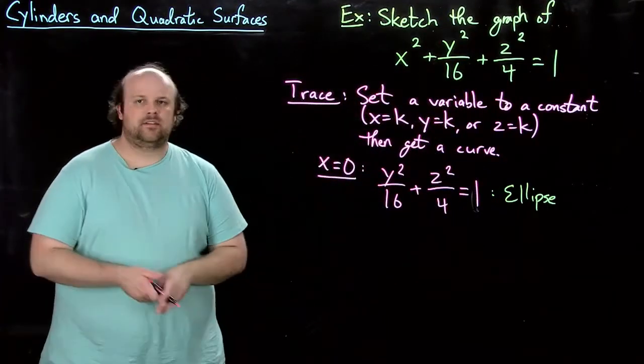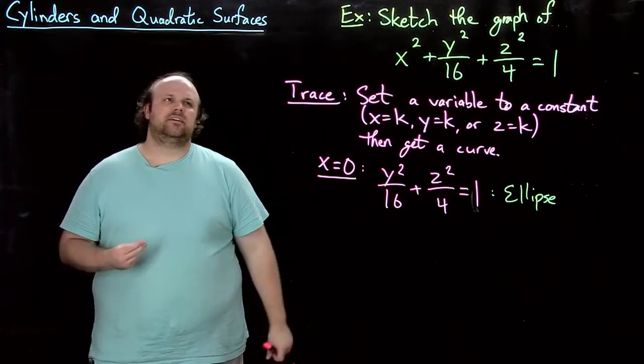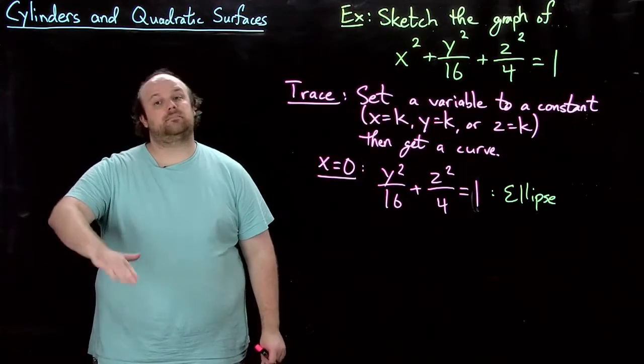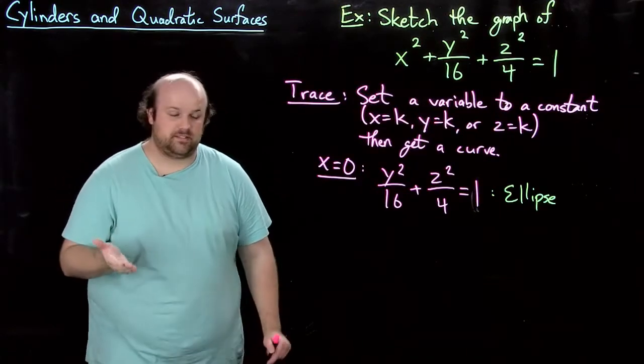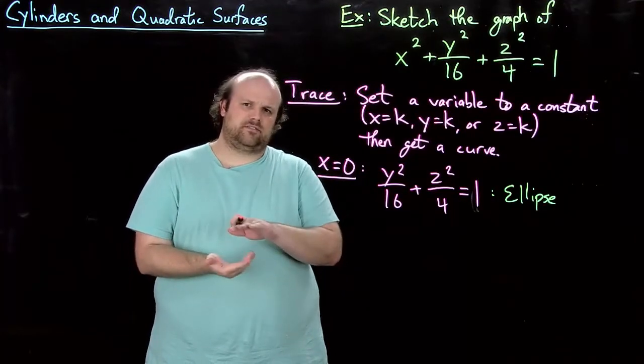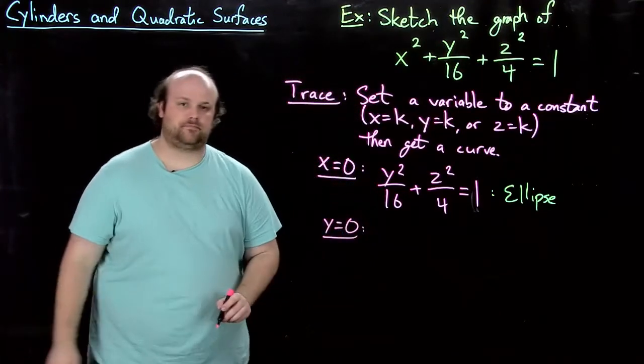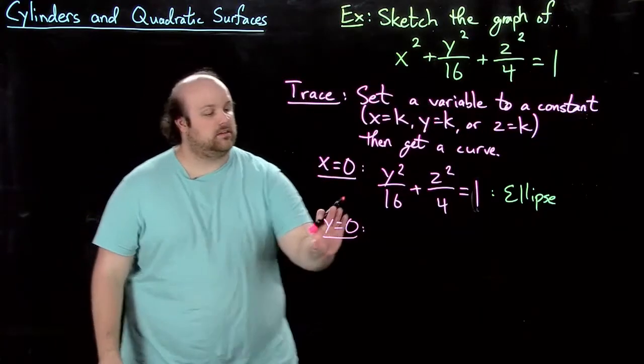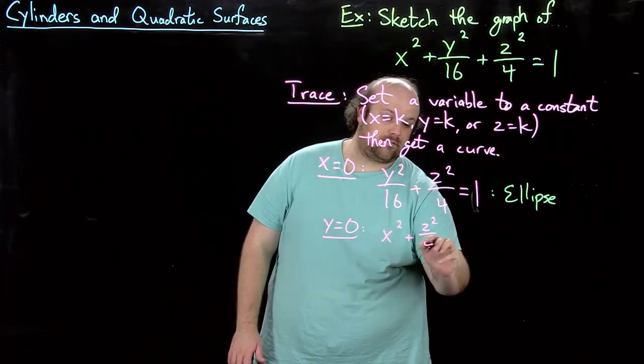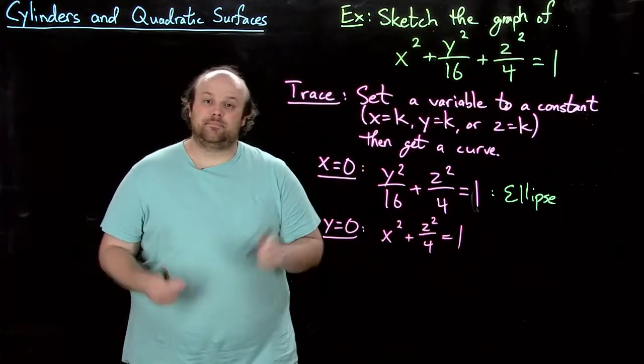Now let's do another trace. We're always going to pretty much need more than one trace to graph a quadratic surface. Usually about 3 will be a good sort of baseline. Sometimes you'll have to go more than 3 as well. But I think 2 is probably too little. 3 might be a good sort of starting point. So let's take this time the trace y equals 0. What is this? We plug y equals 0 in up here. We get x squared plus z squared over 4 equals 1. Well, you might know that as also being an ellipse.